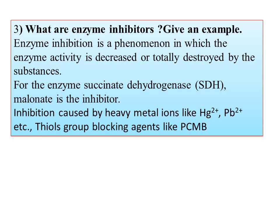Next question: what are enzyme inhibitors? Give an example. An enzyme is a biocatalyst. An enzyme inhibitor is a phenomenon in which the enzyme activity is decreased or totally destroyed by a substance. For example, for the enzyme succinate dehydrogenase (SDH), malonate is an inhibitor.